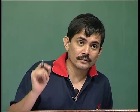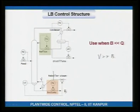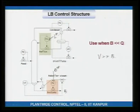Since stabilization is a primary objective of a control system, to ensure levels are properly regulated — because levels are non-self-regulatory — the bottom level must be controlled using the steam flow rate, i.e., the reboiler duty. The operator can then adjust the bottoms set point and the reflux set point to get the desired separation. Hence it is called the LB structure.